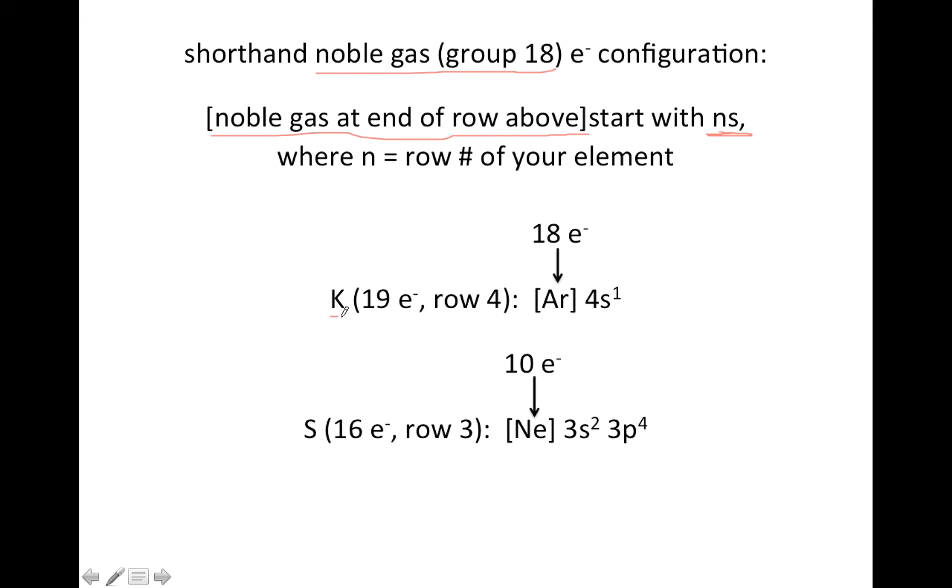So potassium 19 electrons, we just did this example, is in the fourth row. So I go up to the third row, and I go all the way to the end on the right, and I write that noble gas in brackets, argon.